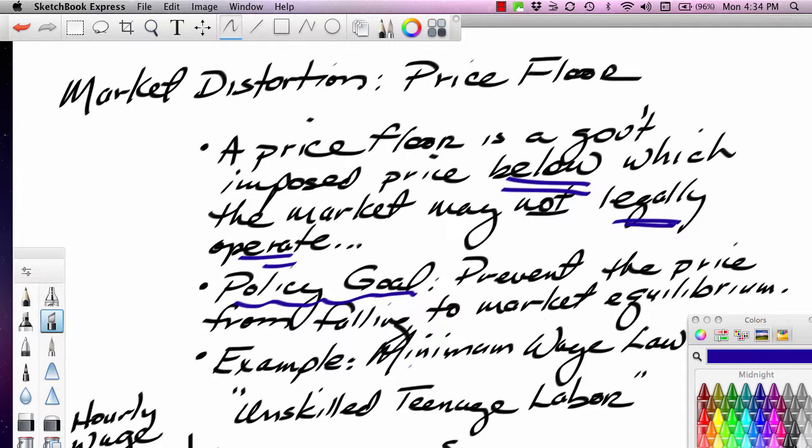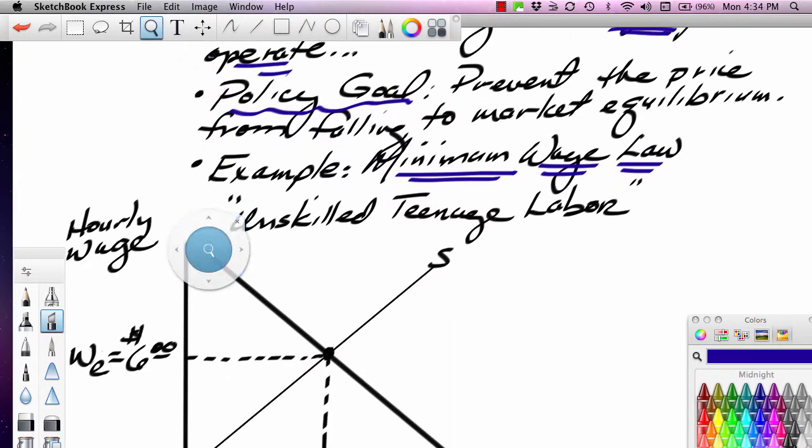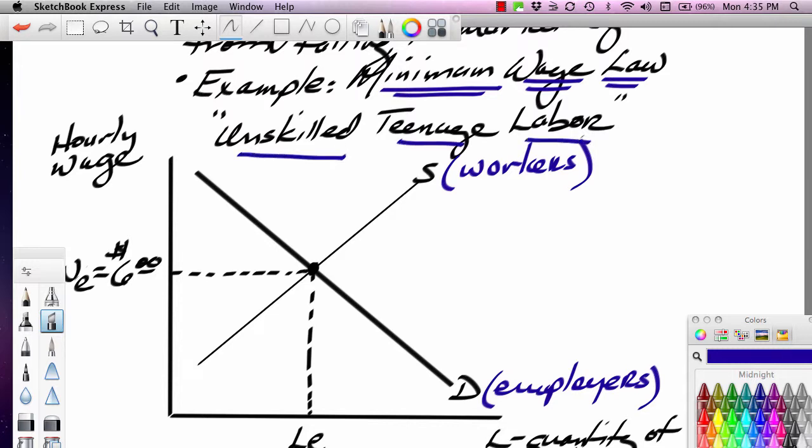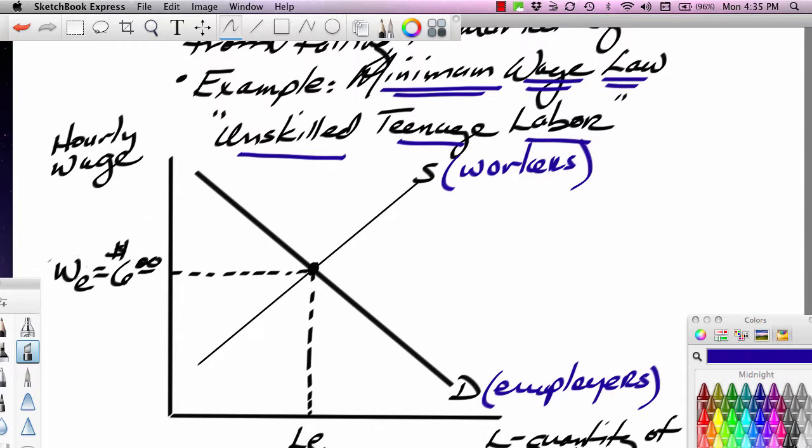Now the example we're going to use is something called the minimum wage law. The interesting thing about the minimum wage law is we're talking about a labor market. In the case of a labor market, the supplier is actually the workers or the employees, and the demander would be the employers. Now I'm assuming that the market we're looking at is a market called the unskilled teenage labor market.